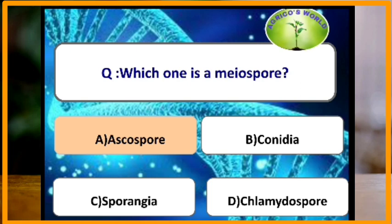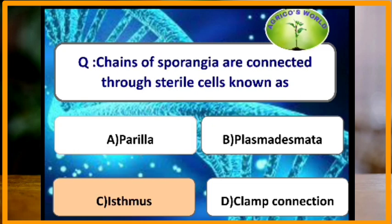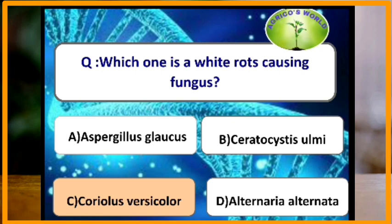Chains of sporangia are connected through sterile cells called isthmi. Which one is a white rot-causing fungus? Coriolus versicolor is a white rot-causing fungus.